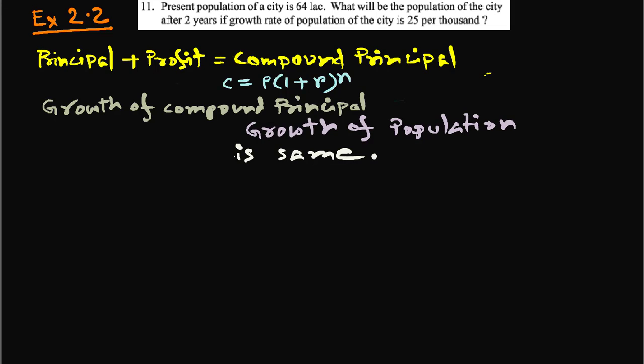Assalamualaikum, greetings from Talent Upskill Class 8 English version Math. The topic is profit and compound profit, exercise 2.2, question number 11. Present population of a city is 64 lakhs. What will be the population of the city after two years of growth if growth rate of population of the city is 25 per thousand?